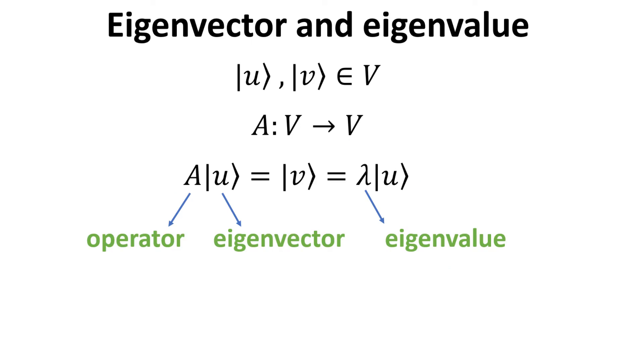Now, let's consider the vector space V and the linear operator A which maps a ket from V to V. Here, the operator A maps the ket U onto the ket V.